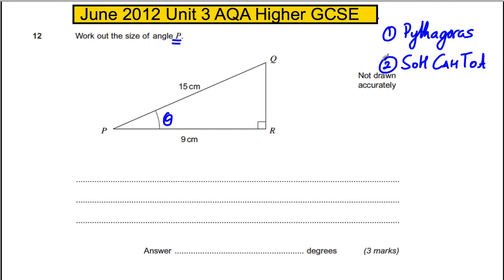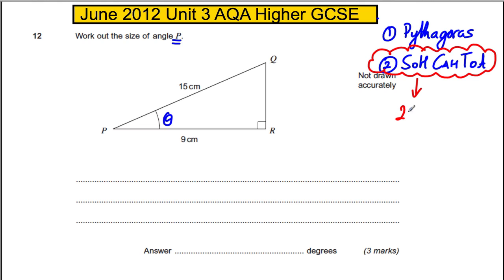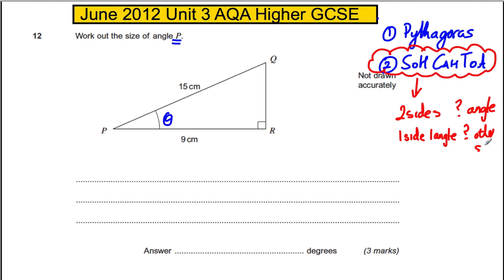We actually did a Pythagoras earlier in this paper, so it's not that. We have two sides and we want to work out an angle, so clearly it's SOH-CAH-TOA. With SOH-CAH-TOA we usually have two sides to find an angle, or one side and one angle to find another side.